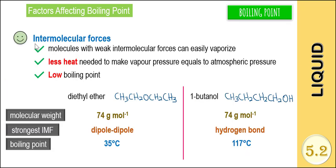Another factor that affects the boiling point is the intermolecular forces. Molecules with weak intermolecular forces can easily vaporize, because less heat is needed to make the vapor pressure equal to the atmospheric pressure, so the boiling point is lower. For example, comparing two molecules with the same molecular weight — diethyl ether and 1-butanol — the strongest intermolecular force in diethyl ether is dipole-dipole force, while in 1-butanol we have a strong hydrogen bond. Diethyl ether has a lower boiling point compared to 1-butanol because the hydrogen bond is stronger than the dipole-dipole force.